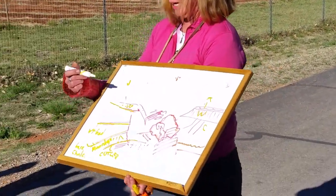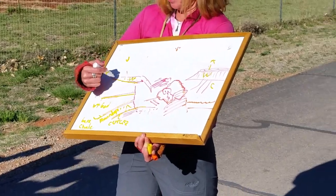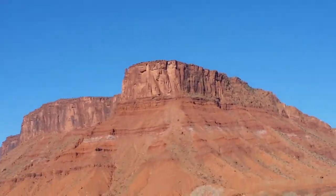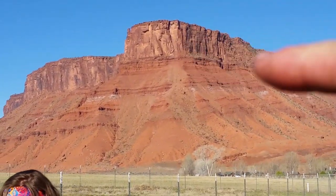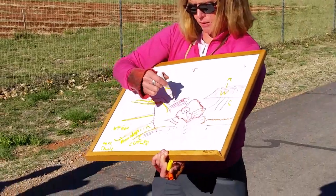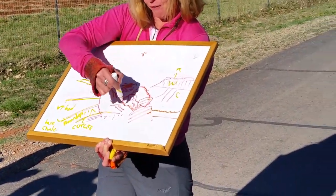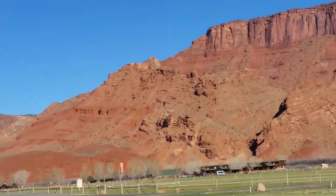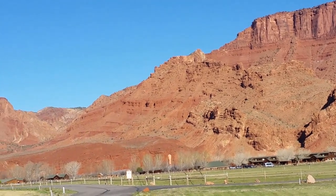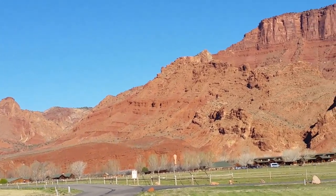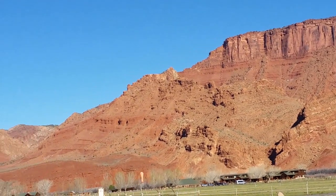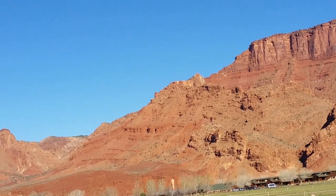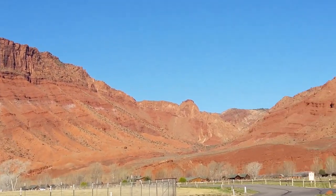Now let's look at that Wingate up there. What does the Wingate do? And then it's all messy back here. And then there are some big fallen blocks of the Wingate down here — that's all broken-up Wingate. And probably a little bit of Wingate and Kayenta all broken up right in here, right in the middle of where all of that big mess is.